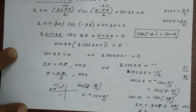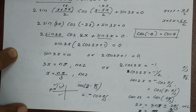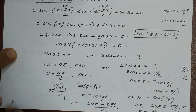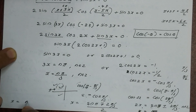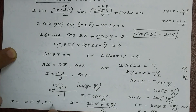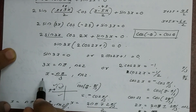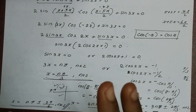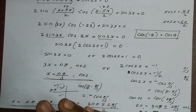So cos2x equals cos(2π/3), giving 2x equals 2nπ plus or minus 2π/3, where n belongs to Z. Dividing by 2: x equals nπ plus or minus π/3, where n belongs to Z. This is the general solution for problem 9.